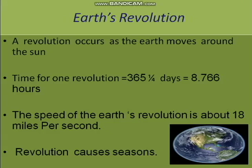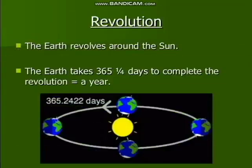The speed of the earth's revolution is about 18 miles per second. Revolution causes the seasons, while rotation causes the day and night. The earth revolves around the sun and it takes 365 and a quarter days to complete one revolution.